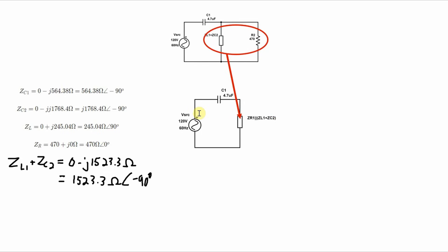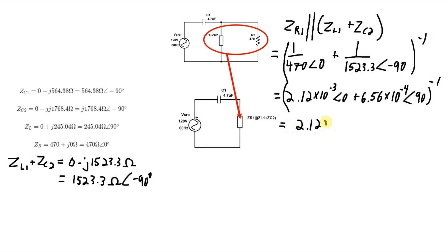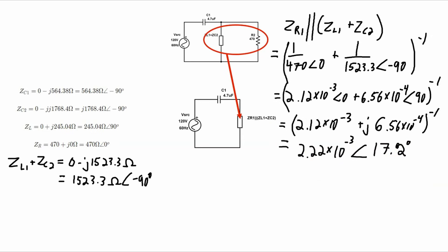The next thing to do is combine R2 in parallel with the series combination of inductor 1 and capacitor 2. I'll convert the resulting value from rectangular coordinates into polar coordinates, then take the inverse of that number to give me the final impedance for this equivalent circuit.